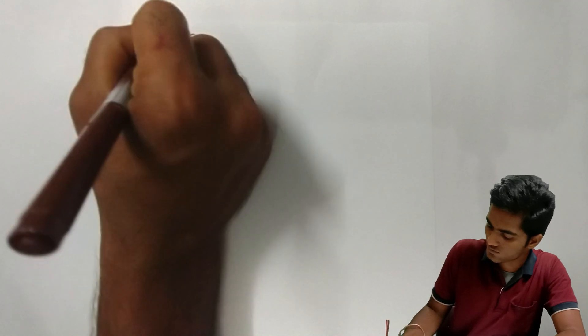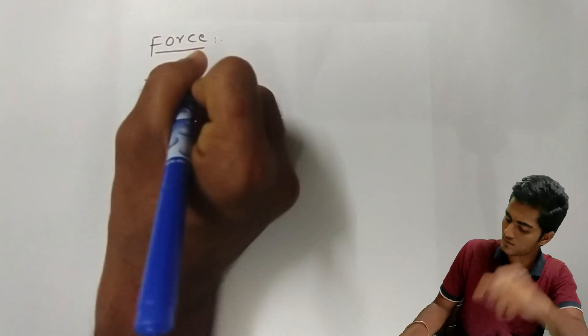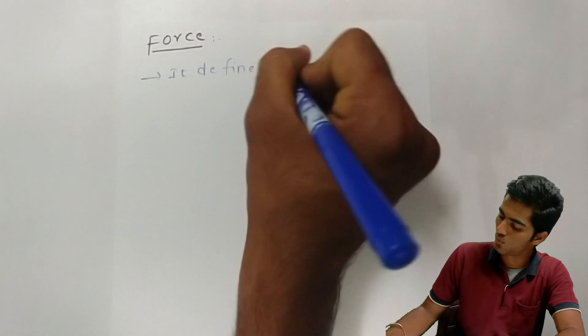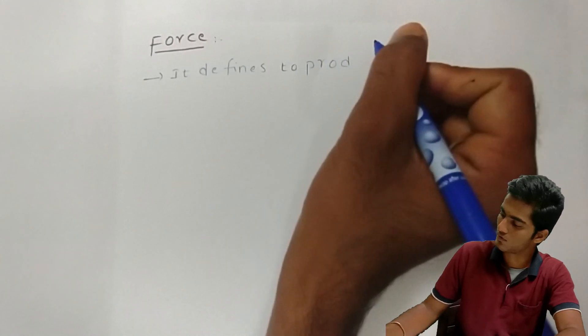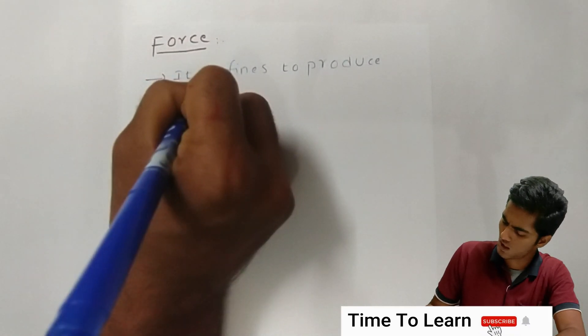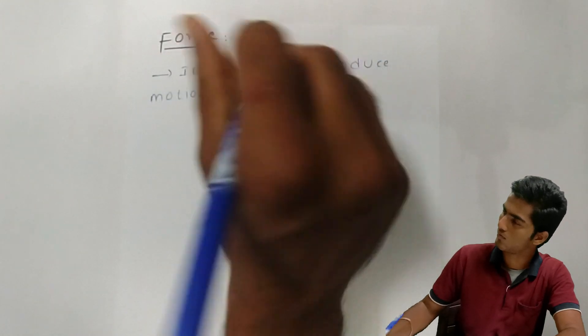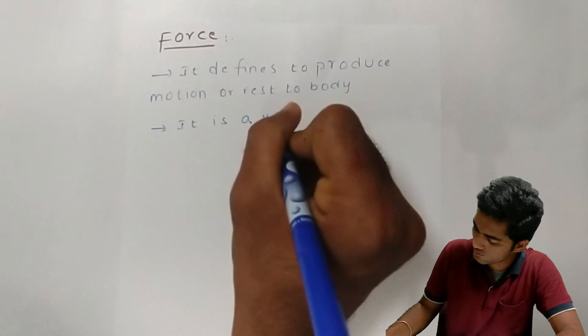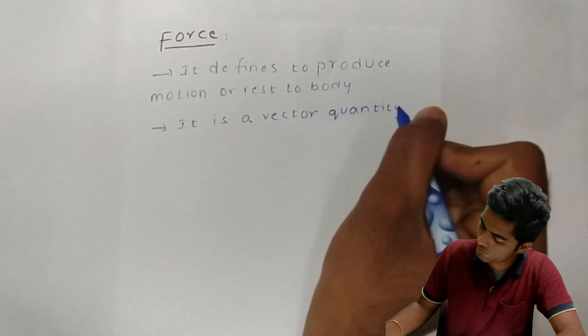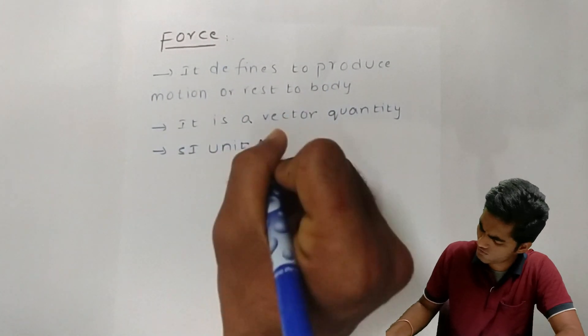Force defines to produce motion or rest to the body. It is a vector quantity. SI unit of force is Newton.